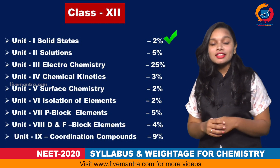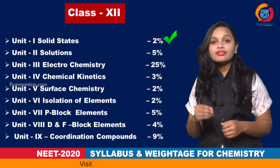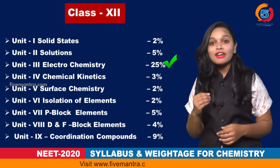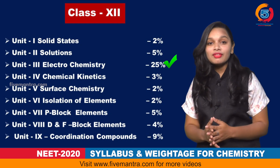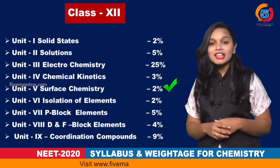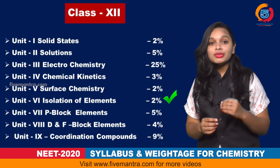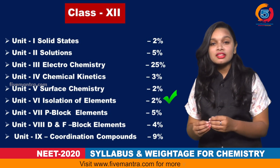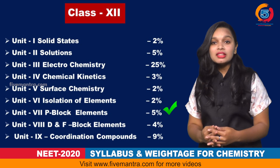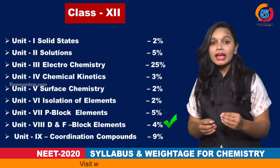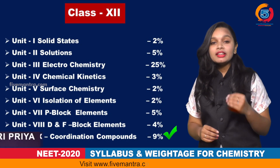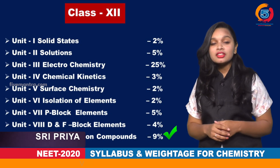For intermediate second year chemistry: Unit 1, Solid State, has 2% weightage; Unit 2, Solutions, has 5% weightage; Unit 3, Electrochemistry, has 25% weightage — the highest weightage; Unit 4, Chemical Kinetics, has 3% weightage; Unit 5, Surface Chemistry, has 2% weightage; Unit 6, Isolation of Elements, has 2% weightage; Unit 7, P Block Elements, has 5% weightage; and Unit 8, D and F Block Elements, has 4% weightage.